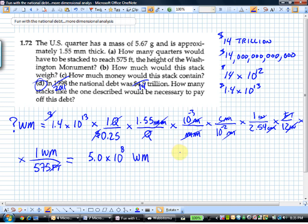For those of you still adjusting to scientific notation, that is 500 million. So in order to pay off our current national debt of 14 trillion dollars, we would need 500 million stacks of quarters that were as high as the Washington Monument.